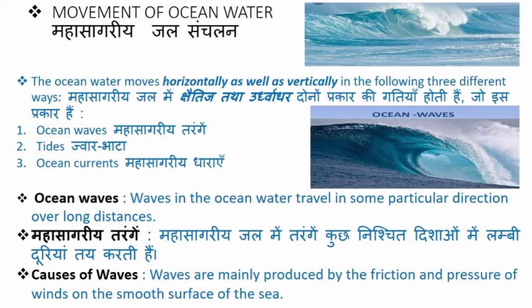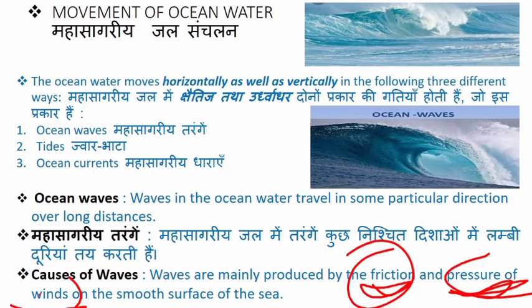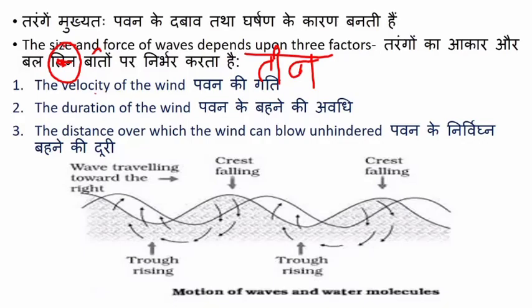Waves are mainly produced by the friction and pressure of winds on the smooth surface of the sea. So wind friction and pressure on the sea surface is what causes waves. We have discussed what waves are; now let's understand what affects them.